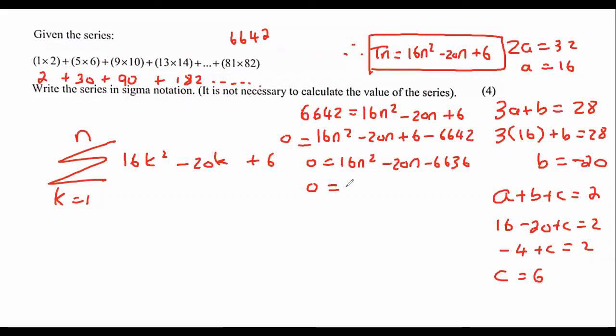There we go. And so n would be 21 or negative 19.75. But remember that n can never be a negative and it has to be an integer number, or a positive whole number or positive natural number, whatever you want to call it, because n is the number of terms. So therefore n is 21.